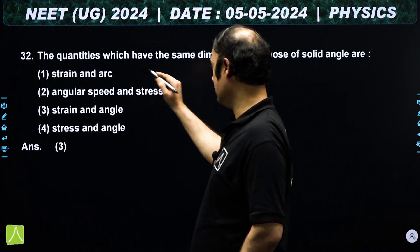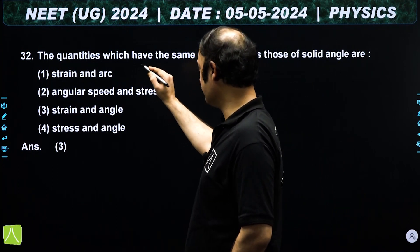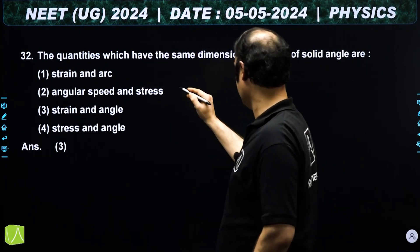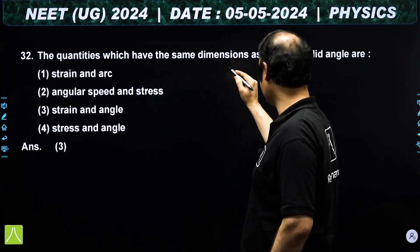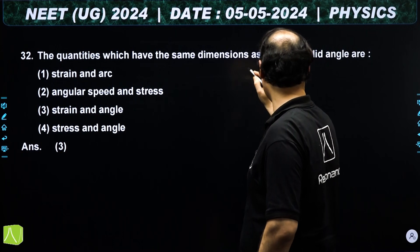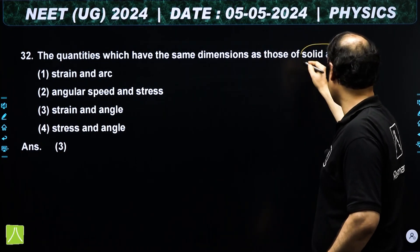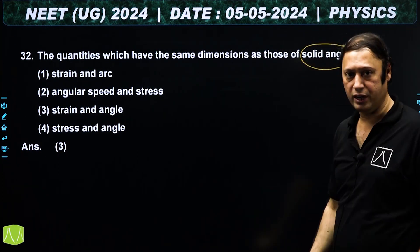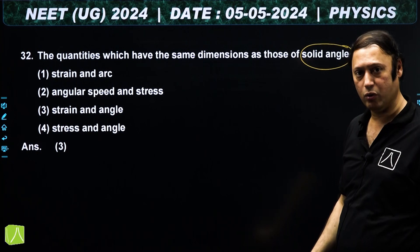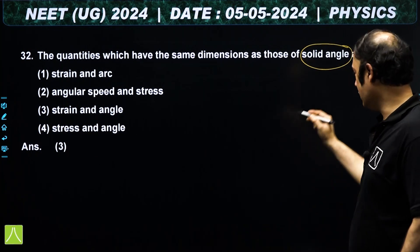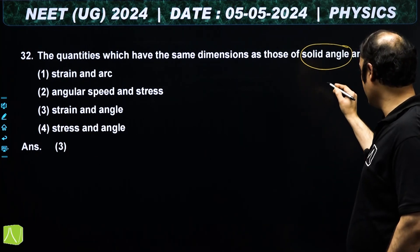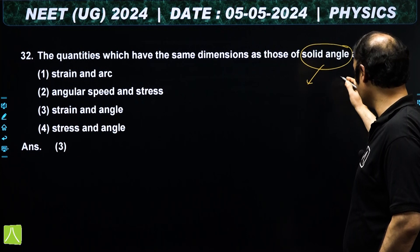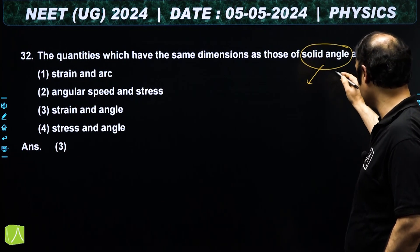Let's look at question 32. In which quantity will the dimension be equal to solid angle? If a quantity equals unit and dimension, it will be equal to plane angle or solid angle, meaning the dimension will be dimensionless.